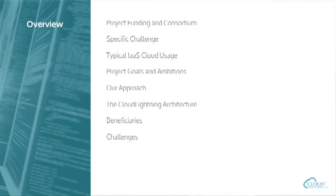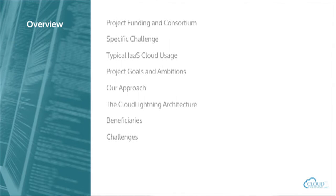So this is the structure of my talk. I'm going to give a brief overview, tell you a little bit about the funding and the consortium involved in the project, the specific challenge we've taken on with respect to the call from Horizon 2020, how typical IaaS infrastructure-as-a-service cloud usage is today, issues we want to address, project goals and ambitions, our approach, the Cloud Lightning architecture, the beneficiaries, and then some challenges. I'll do this in about 20 minutes, so I'll move pretty quickly.